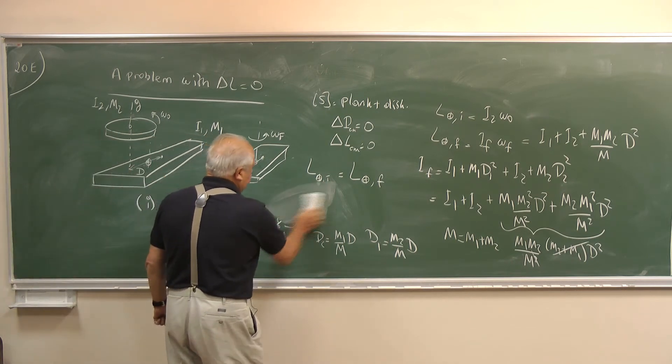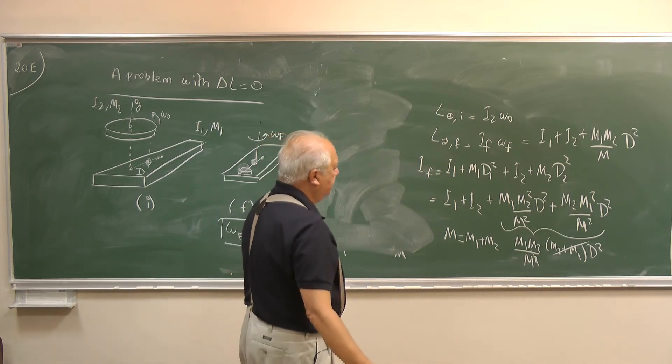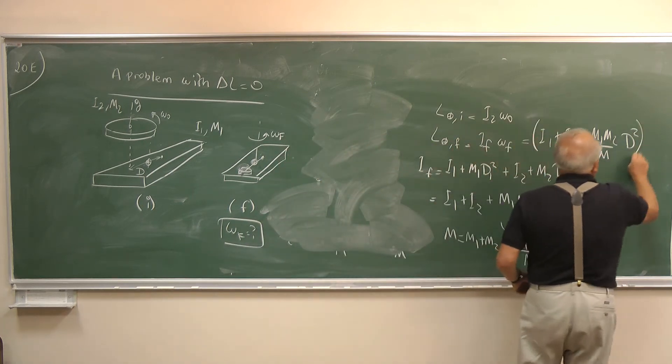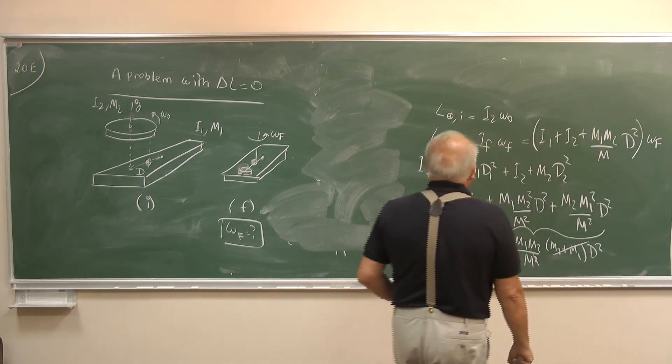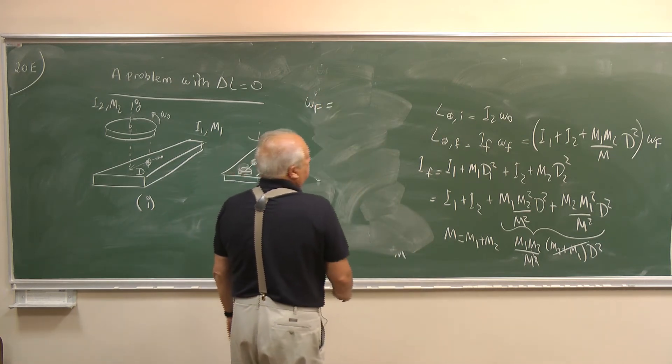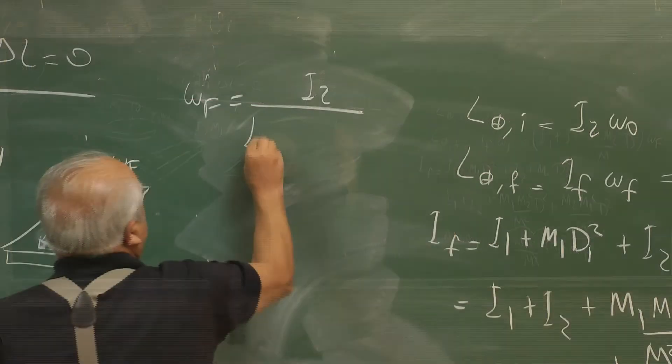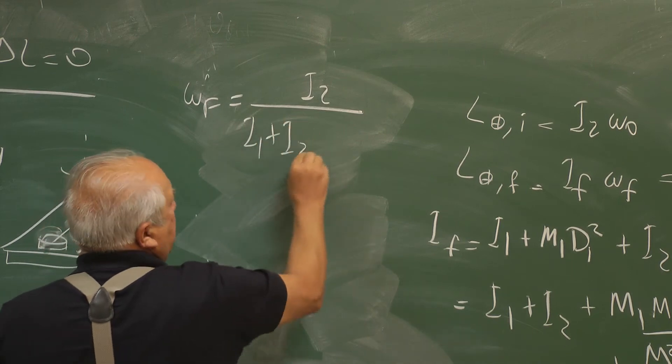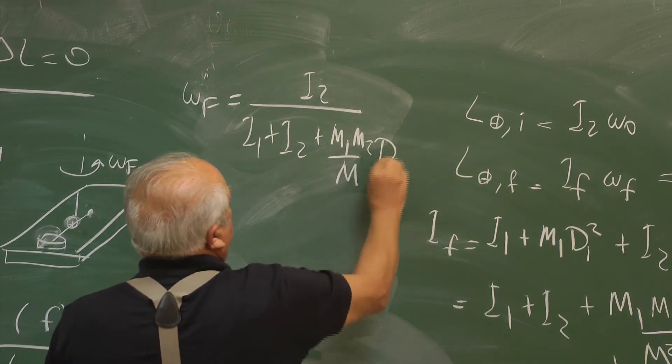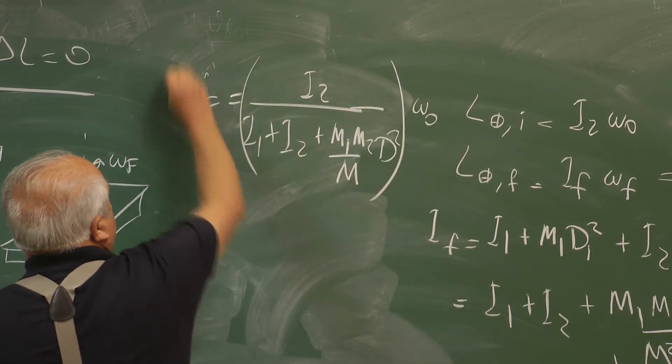Now I'm erasing this part. We have to put omega times omega f so set them equal. Omega f equals I2 over IF which is simply this I1 plus I2 plus M1 M2 over M D square times omega zero. So this is the answer.